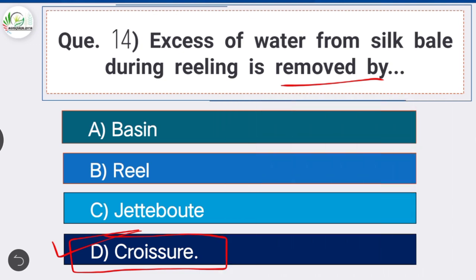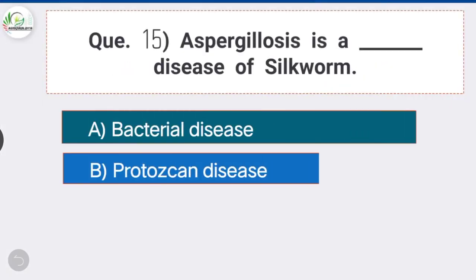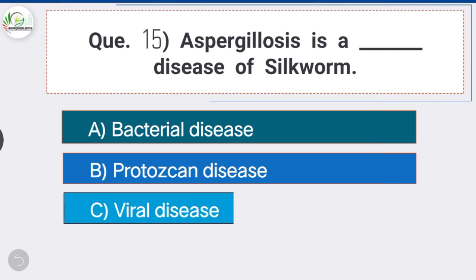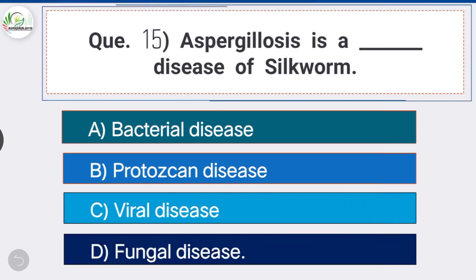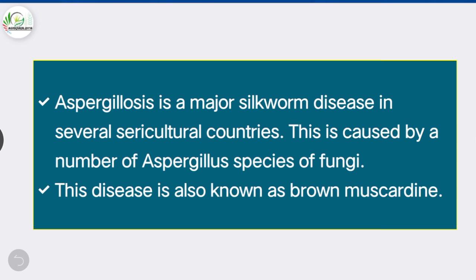Question number fifteen: aspergillosis is a — option D is the correct answer — fungal disease of silkworm. Aspergillosis is a major silkworm disease in several agricultural countries, caused by a number of Aspergillus species of fungi. This disease is also known as brown muscardine.